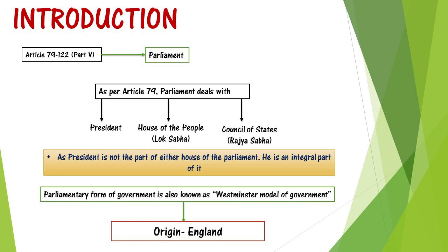As per Article 79, Parliament consists of the President, House of People meaning Lok Sabha, and Council of State meaning Rajya Sabha. The President is not a part of either house — whether Lok Sabha or Rajya Sabha — but plays an important role. The Parliamentary form of government is also called the Westminster model of government. Its origin was in England.